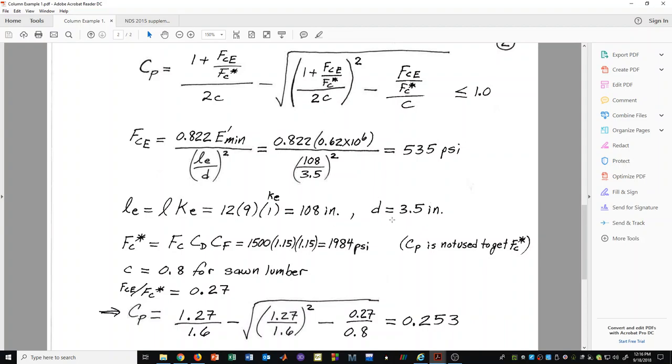In the cross section of the column, we have usually the smaller dimension of the cross section is what we will use for D, unless there's a lot of lateral support preventing buckling about the weak axis. But in this problem, it's pretty easy to know what D is because both dimensions are the same, and that is a 3.5 inch width.